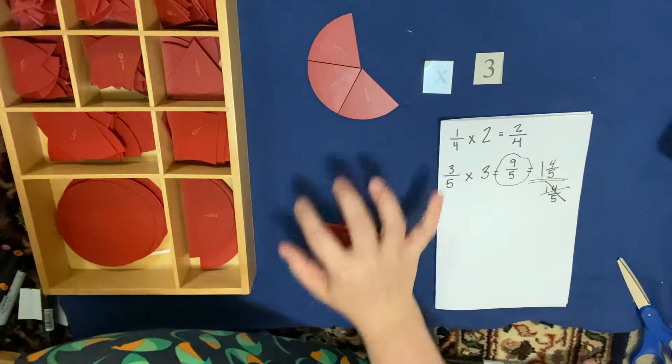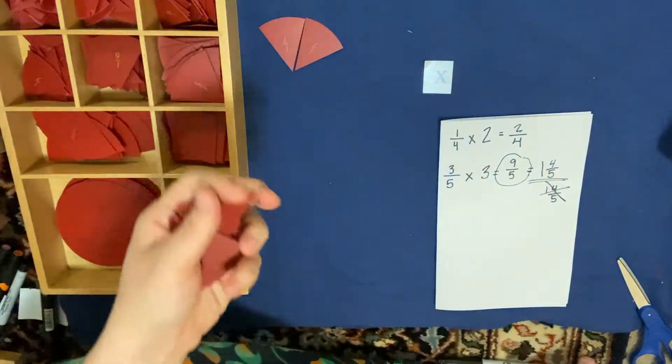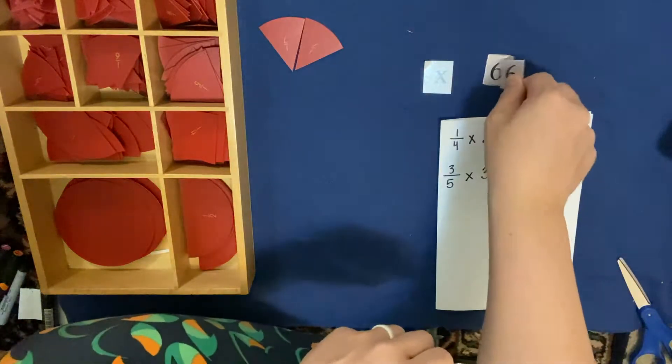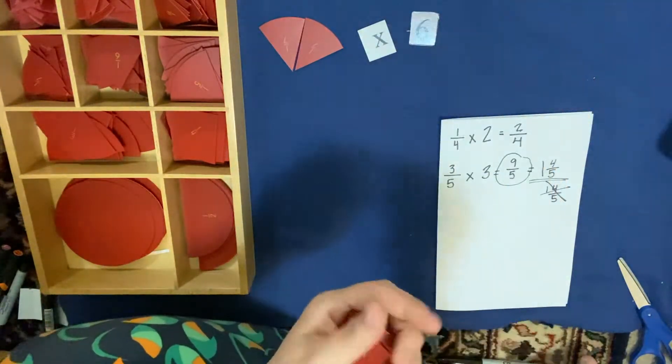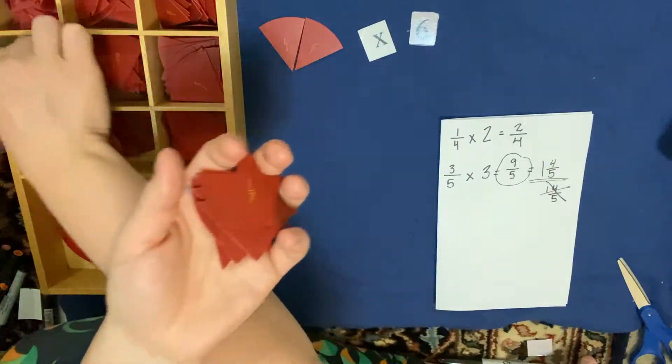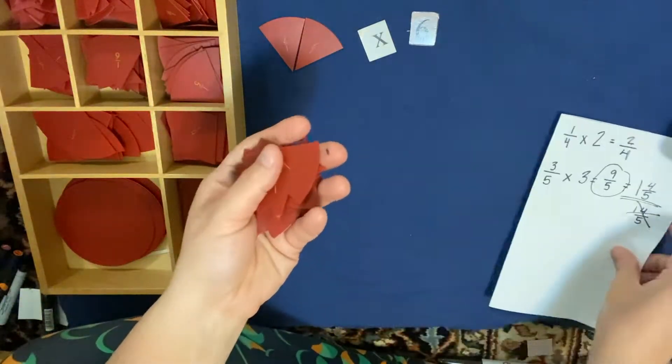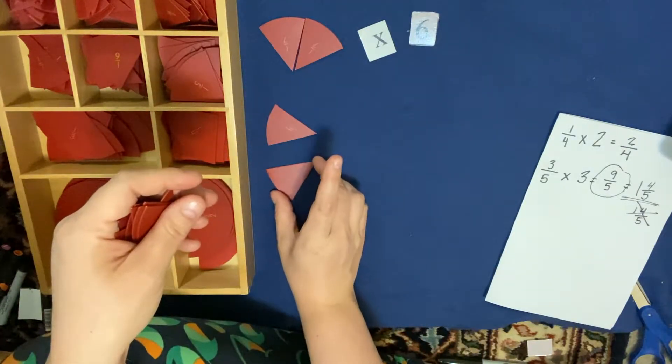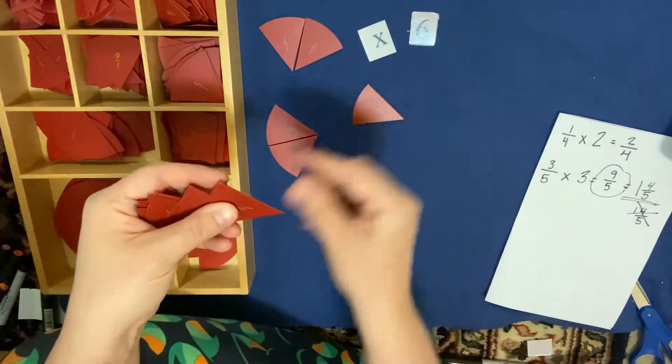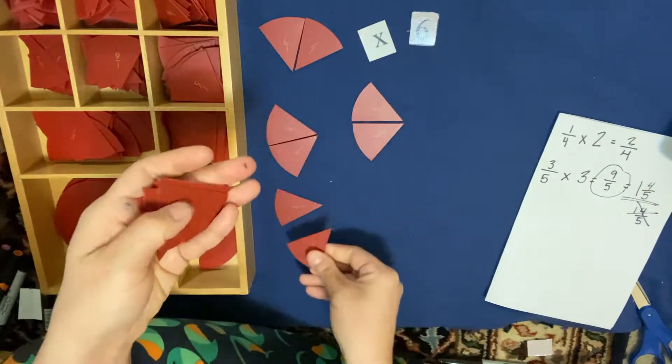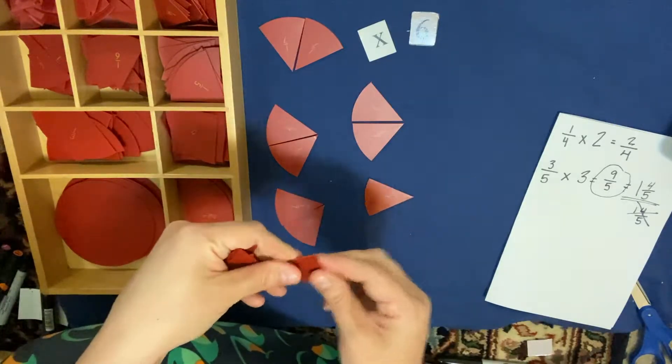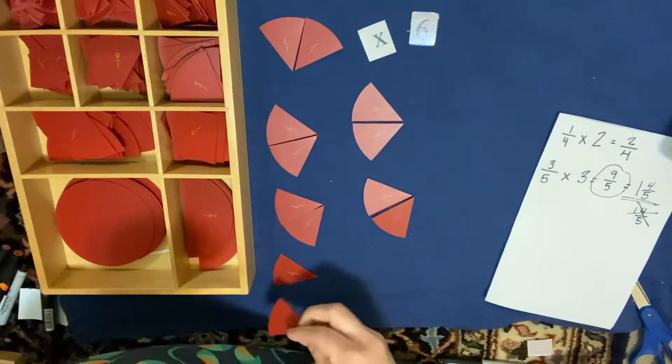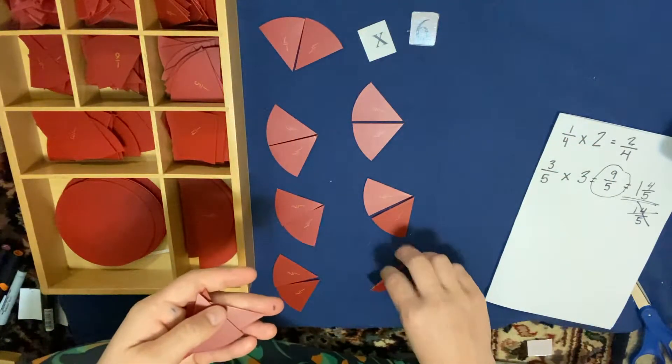Let's go ahead and do another one. 2/7 times 6. 2/7. That's a pretty big one, isn't it? Well, here I have a whole stack of sevenths in my hand. So I need 2/7 six times. So here's 2/7 once, 2/7 twice, 2/7 three times, 2/7 four times, 2/7 five times, and 2/7 six times.